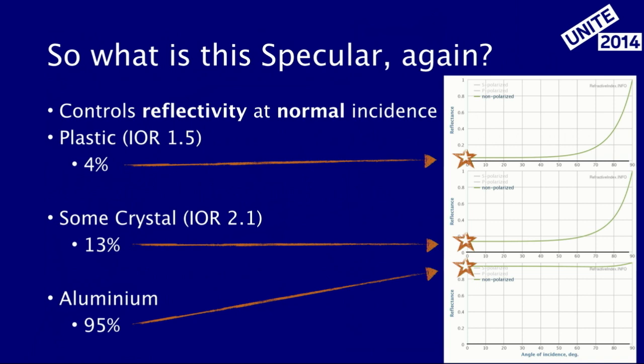So we talked a little bit of the theory. How does that translate into working with the shader? I want to pick two things — basically the specularity and the glossiness, or what we call smoothness — and just explain them a little bit more, because they are very crucial when you set up your materials. So what is this specular input for the shader? It simply means the amount of reflected light when the light is hitting the surface straight from the top — so-called normal incidence.